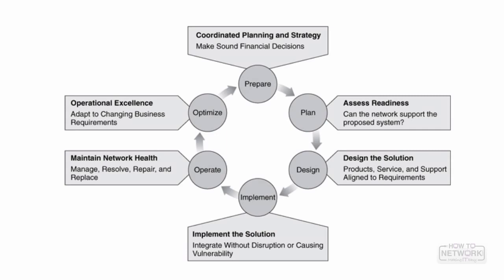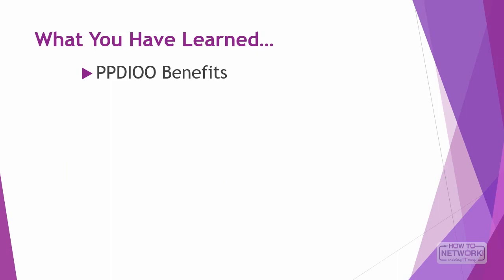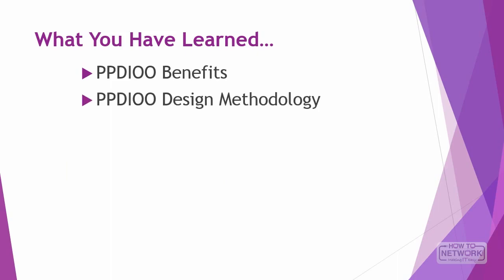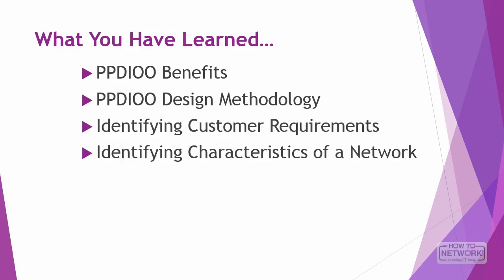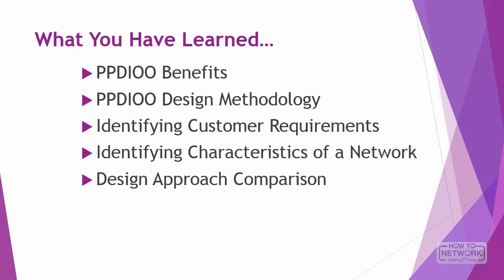Assuming you added a sentence or two after each word, here are some good foundational sentences or questions regarding what is going on in each phase. Here's what you've learned: the benefits and design methodology of PPDIOO, how to identify customer requirements and the characteristics of a network, and the design approach of top-down versus bottom-up and how to properly document a design. Cisco wants you to focus on the first three phases of PPDIOO. Wish you the best of luck in your studies.